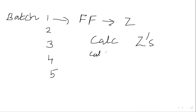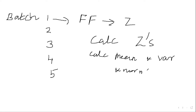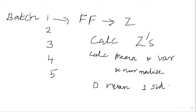In the next step, the mean and variance are calculated from those z values, and then the data is normalized. After normalization, the data will have zero mean and one standard deviation — that is the standard normalization we know about.